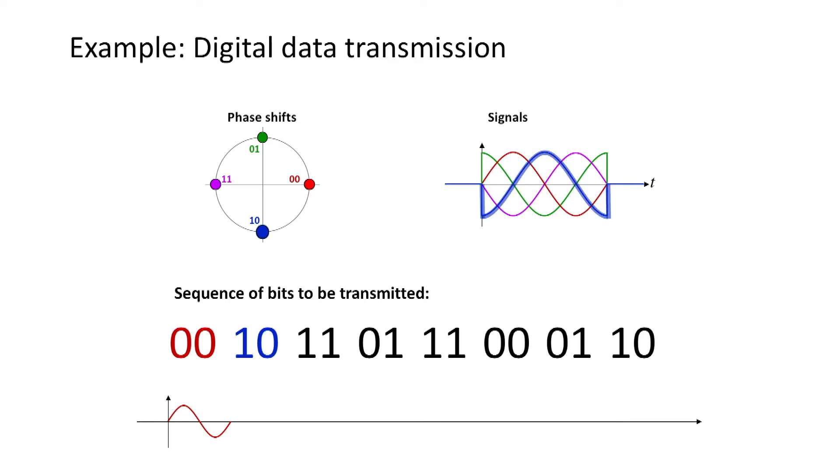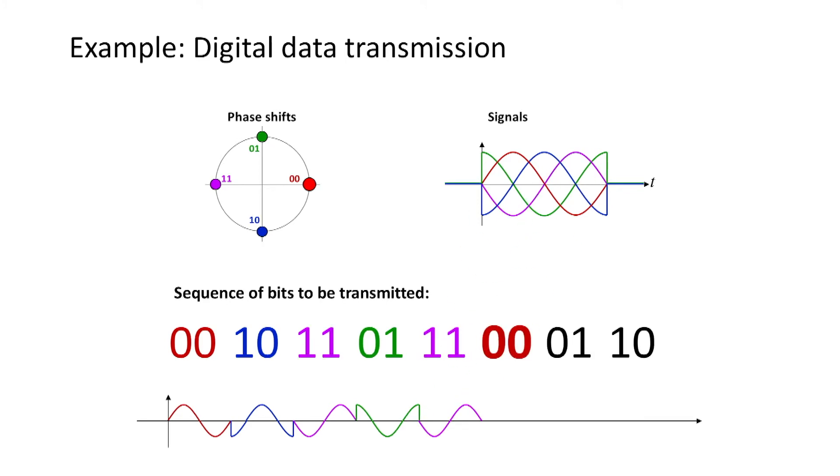One zero is represented by another signal, the blue one. One one is represented by the purple signal, and zero one is represented by the green signal. When we repeat the same sequence of bits again, we send the same signal again.